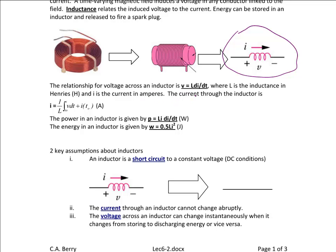If you want to find the current through an inductor, you take the integral of this equation, which yields I equals 1 over L, the integral from T-naught to T, V dt plus I of T-naught, in units of amps. Note that we now have an initial condition. Unlike resistors, inductors and capacitors can store energy.